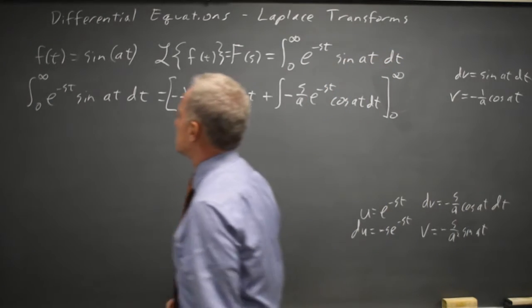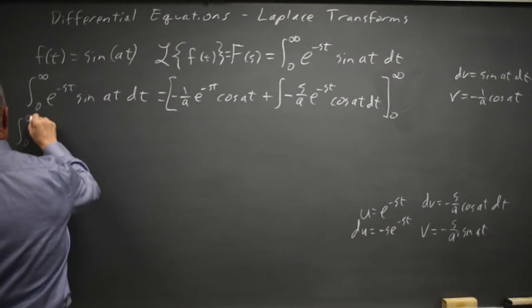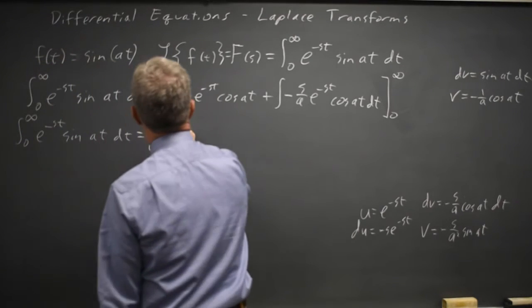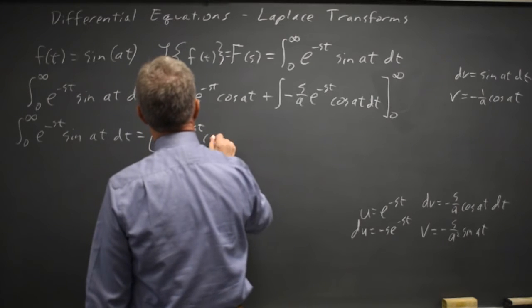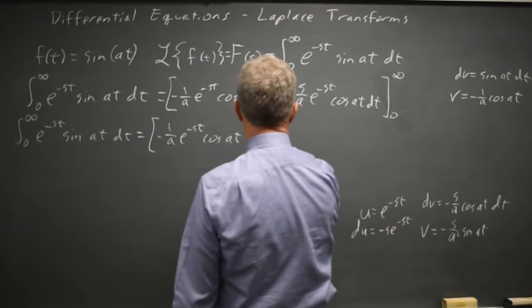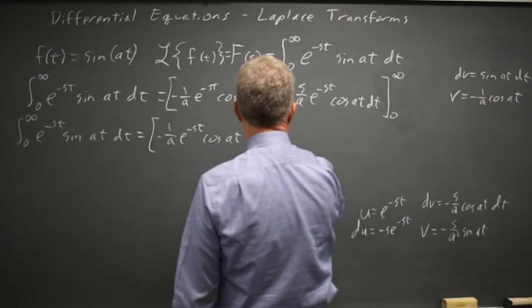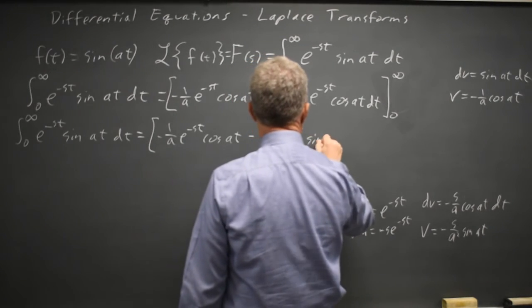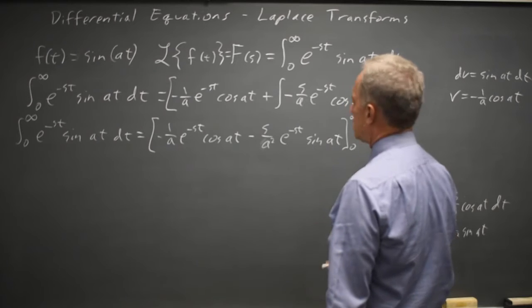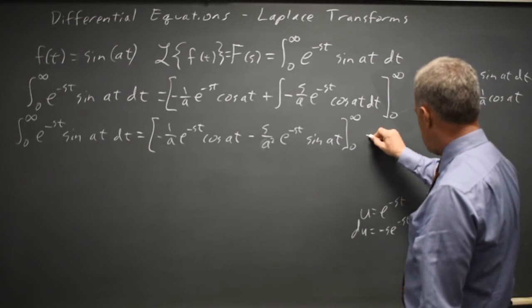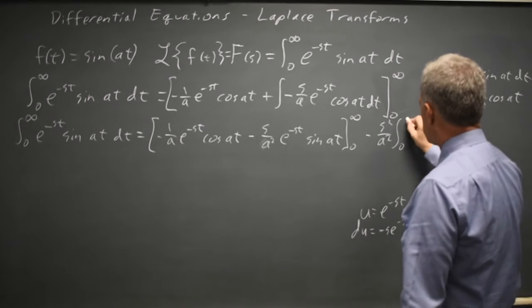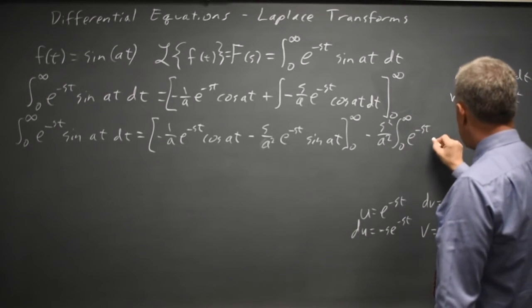Now, being formal, it's zero to infinity for both sides. My original integral of e to the negative st sine at equals negative 1 over a, e to the negative st cosine at, plus my new uv: minus s over a squared, e to the negative st sine at, from zero to infinity. Then minus s squared over a squared times the integral from zero to infinity of e to the negative st sine at.